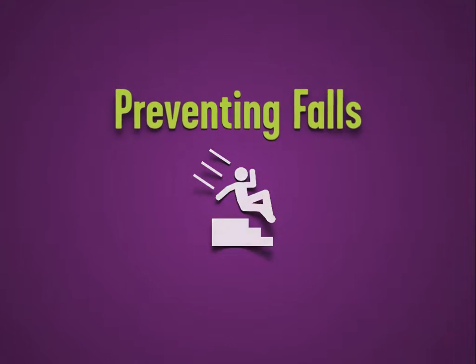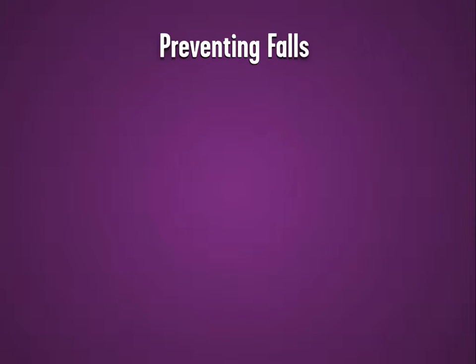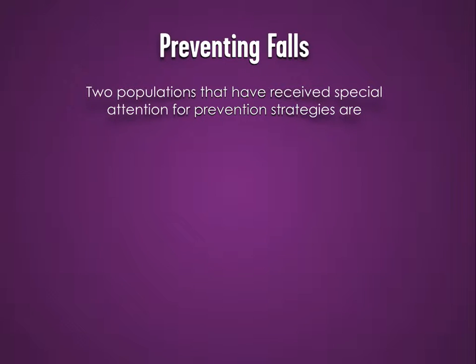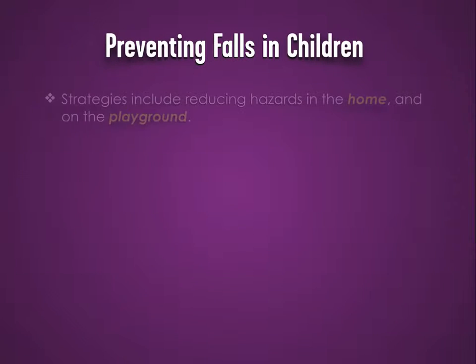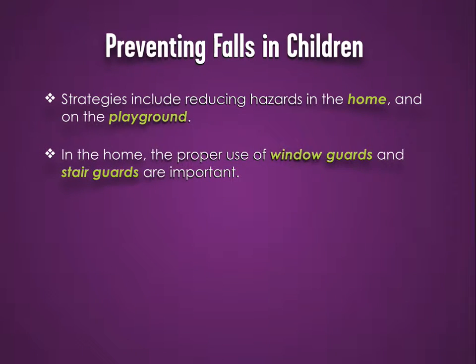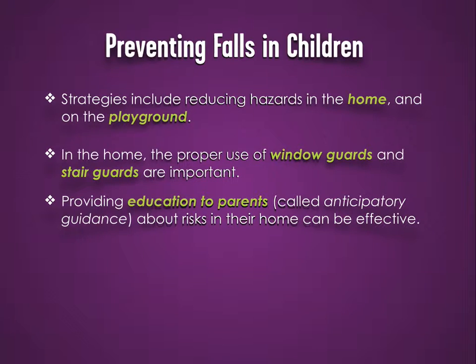Preventing Falls. Two populations that have received special attention for fall prevention strategies are children and older adults. In children, strategies that have been shown to reduce falls include reducing hazards in the home and on the playground. In the home, the proper use of window guards and stair guards are important. Providing education to parents, called anticipatory guidance, about risks in their home can be effective. This has been studied with family physicians and other healthcare practitioners.